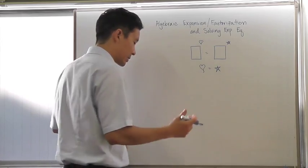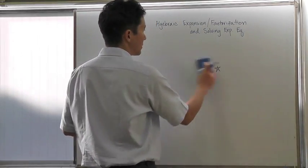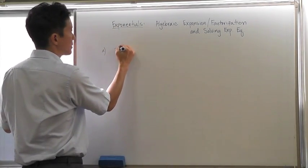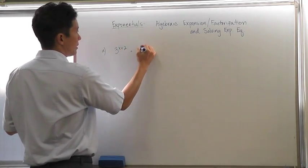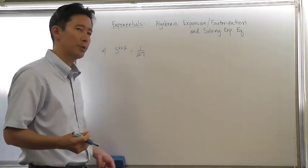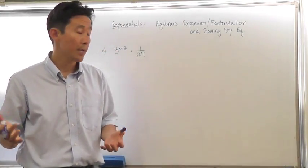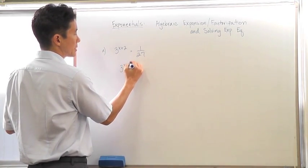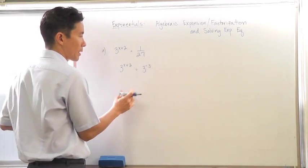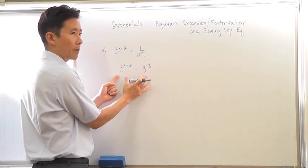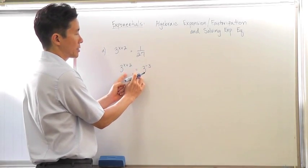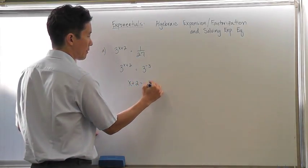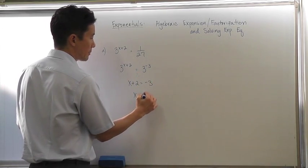Let's take a look at a couple of examples. Say we have 3 to the x plus 2 is equal to 1 over 27. The most important thing is to get the same base — everybody can see the common base is 3. So we get 3 to the x plus 2 equals 3 to the negative 3. Since the bases are the same, the exponents must be equal: x plus 2 equals negative 3, therefore x equals negative 5.